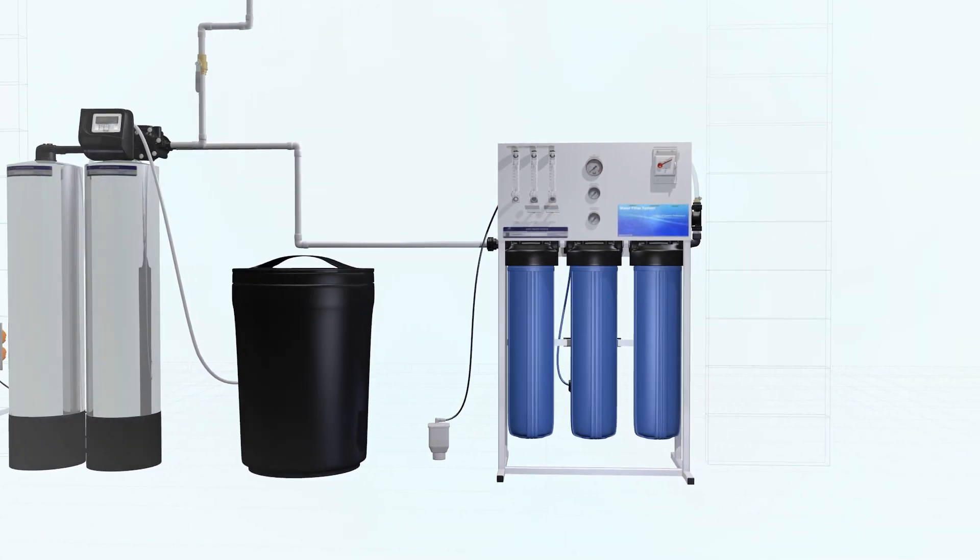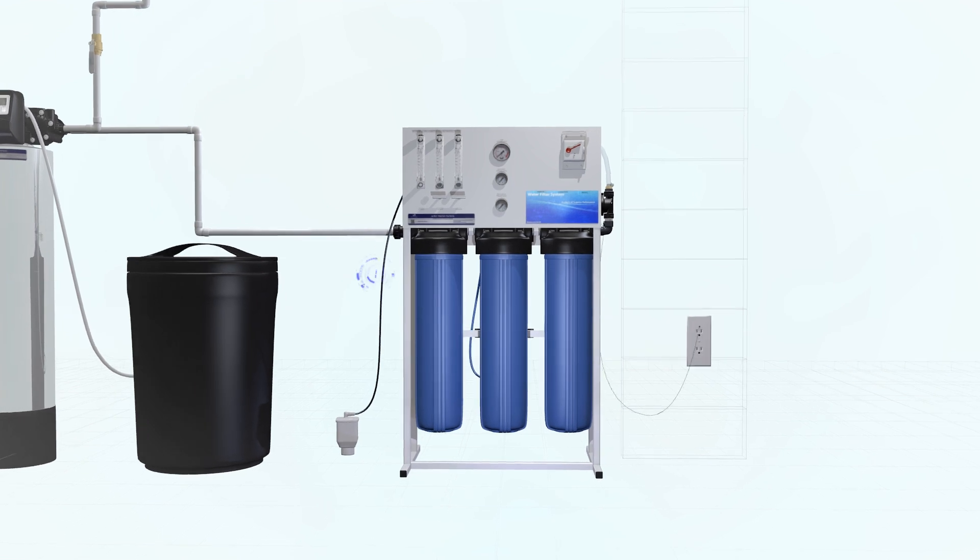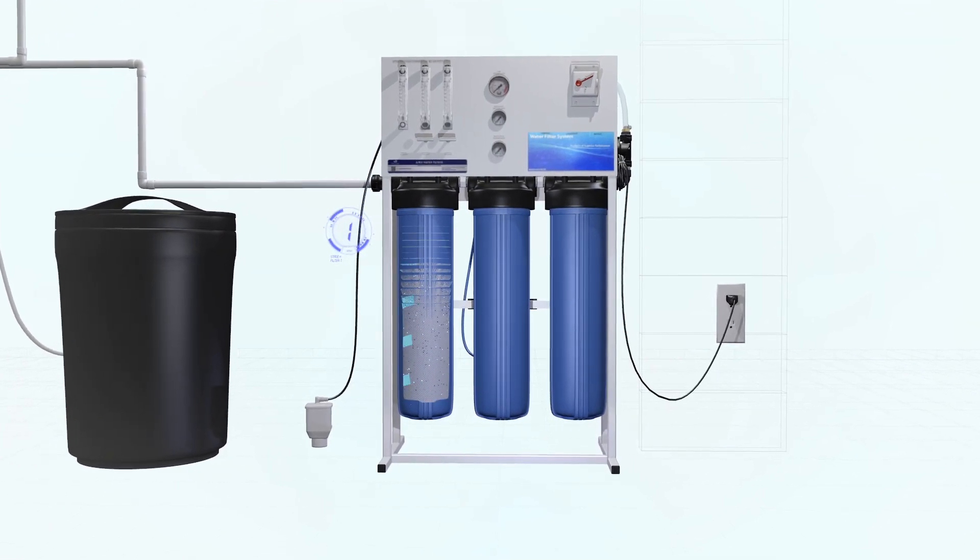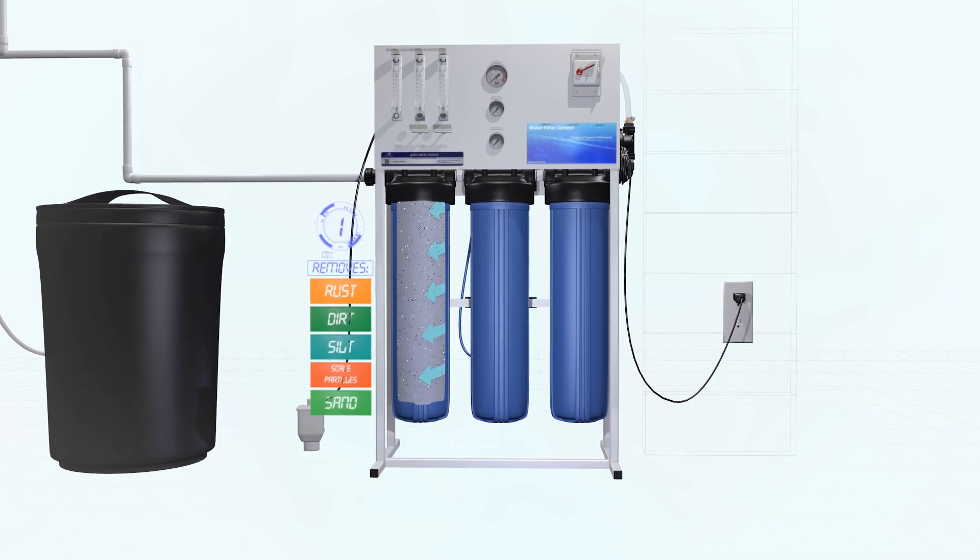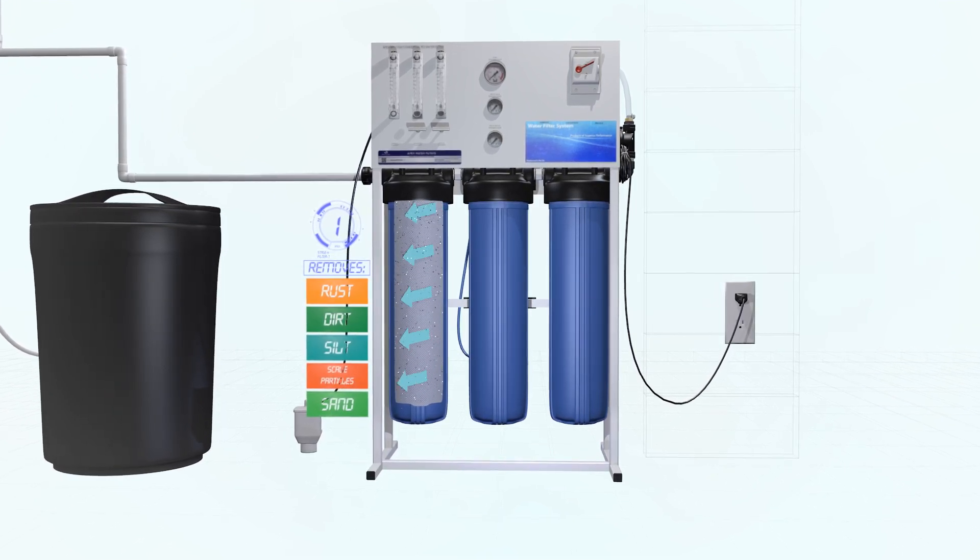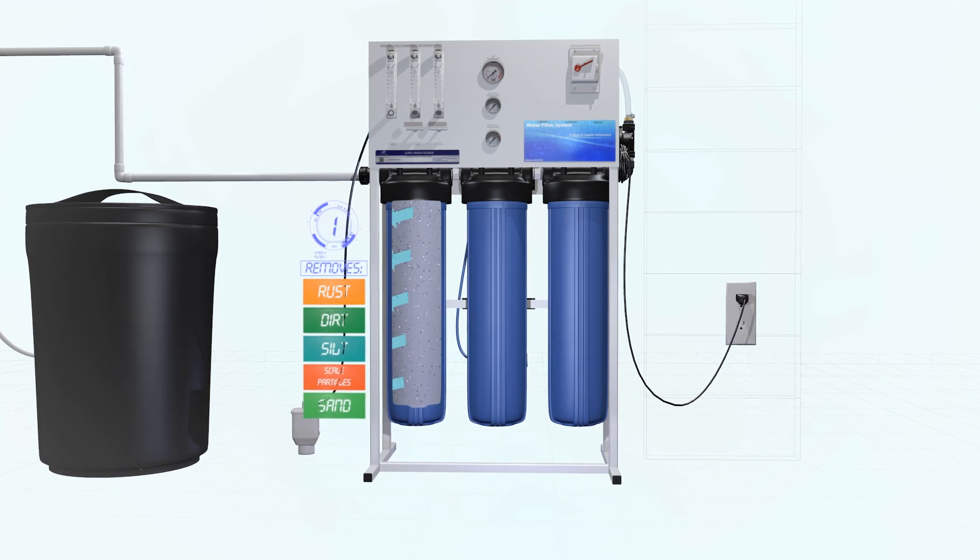Here's how the filtration system works. Water first flows through a 5-micron particulate cartridge that removes rust, dirt, silt, scale particles, and sand. This protects the system from clogging and damage.